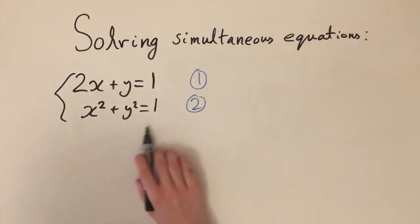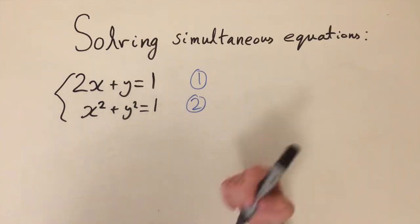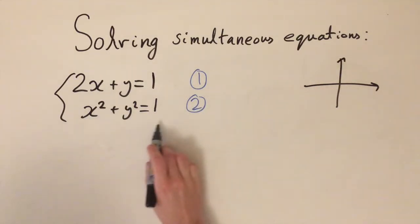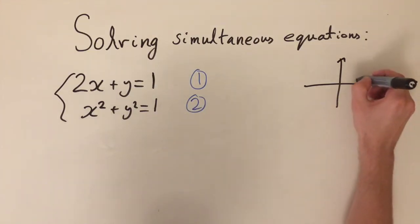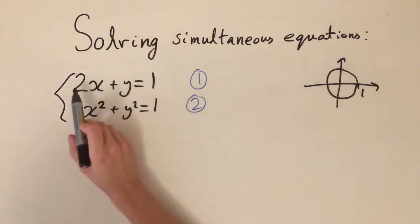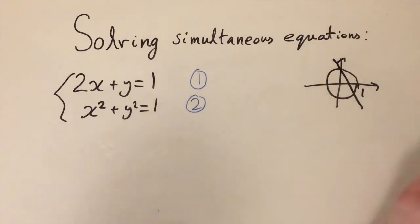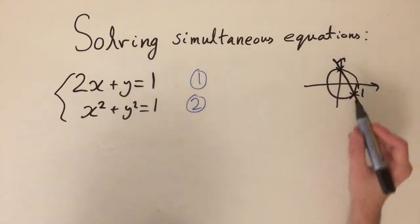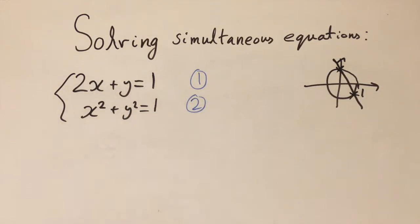First, a quick remark about what solving this equation actually means geometrically. We can graph what these equations look like. The second equation is actually the equation of a circle — centered at zero, radius one. The first equation is just a straight line. As you can see from the diagram, we're going to have two places of intersection, so these equations should give us two separate solutions.